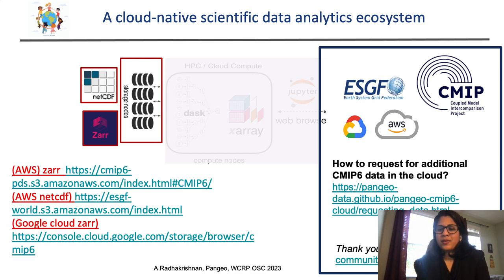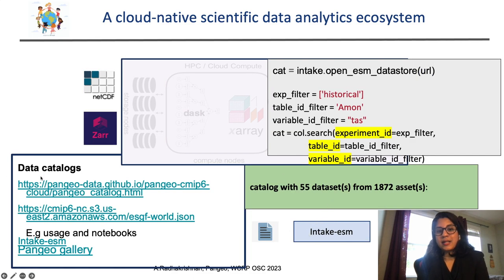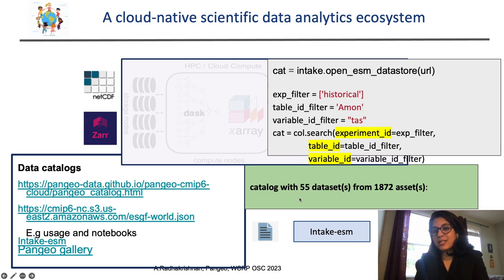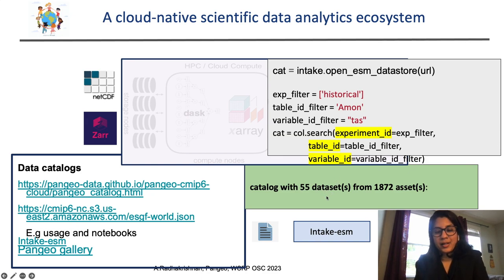It's often also difficult to locate what type of datasets we actually need for our analysis. That's where the intake ESM data catalogs come into picture. Here is a quick example to show you how simple a search can be and how easily this blends in with your analysis, because each of the datasets resulting from this search can become an Xarray dataset object in your analysis running in your Jupyter notebook.